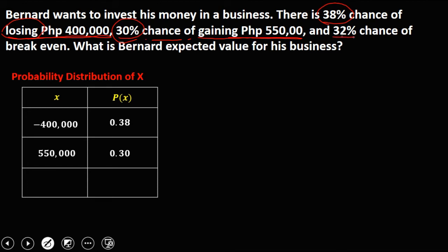And 32% chance of break even — since it's break even, the value is 0. And the probability is 32%, so in decimal that's 0.32.